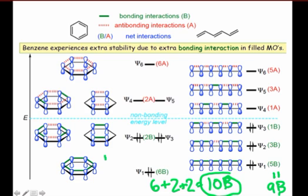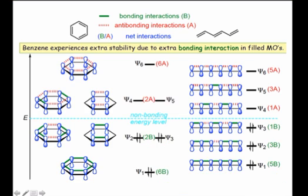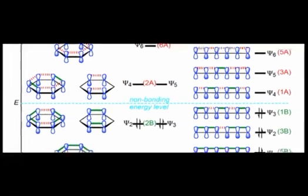What does this tell us? That the electrons in the filled orbitals of benzene are, on the whole, more stable than those in hexatriene. The additional stability of these electrons helps explain why benzene is less reactive than most linear pi systems.